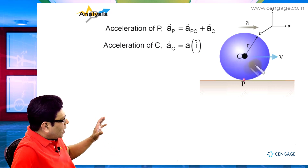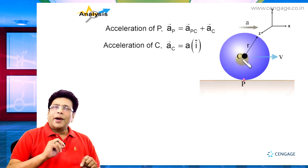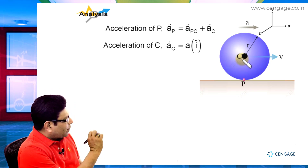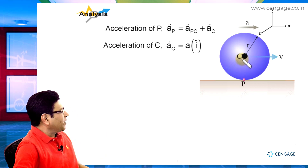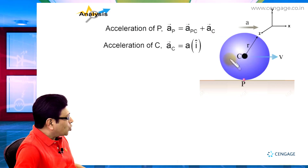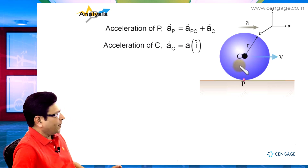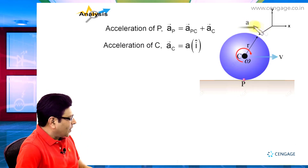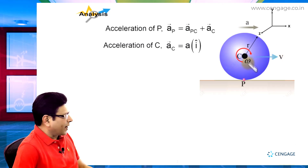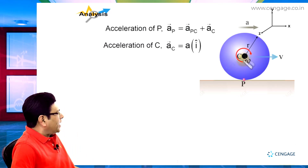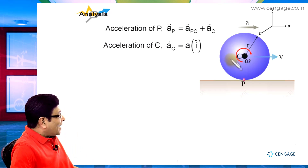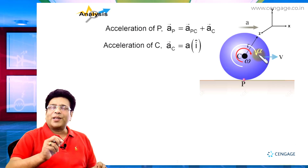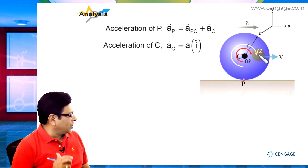Now consider the motion of the disk. It is given that the disk is rolling, meaning point P is not sliding. If point P is not sliding, the rotation of the disk with respect to C should be in the clockwise sense, so the angular velocity omega is clockwise. Since the centre is accelerating, v is increasing with time, meaning omega should also increase with time. For omega to increase, the angular acceleration alpha of the disk must be in the same sense as omega, so alpha is also clockwise.